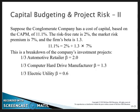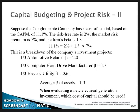The automotive retailer has a beta of 2 and the computer hard drive manufacturer a beta of 1.3. Multiplying one-third by each of those gives us the average beta for the firm's assets. Now, if we're evaluating a new electrical generation investment, which cost of capital should be used?